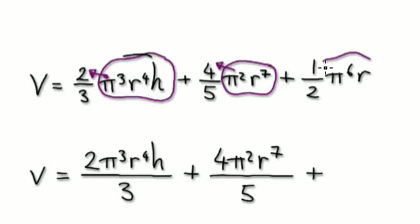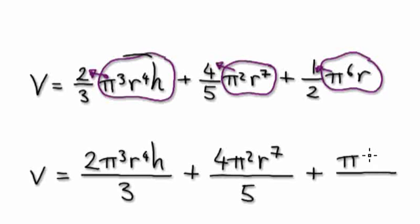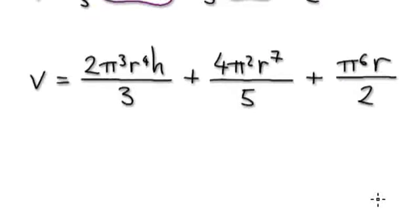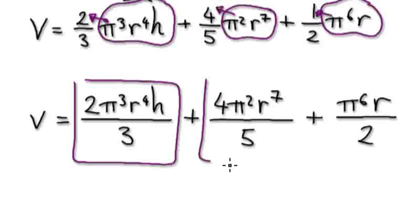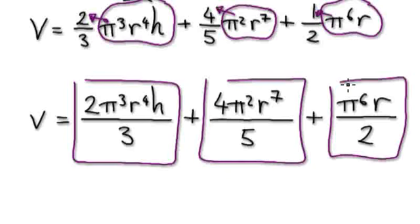Again, visualize this as a bubble here. It's multiplying a fraction, so it gets multiplied to the top. But the top is 1, so 1 times anything is just that bubble. So it's going to be pi to the power of 6, r over 2. So now visualize it as one block adding another block adding another block. That's what you've got.